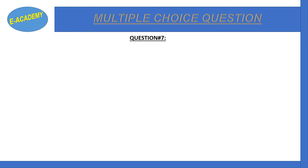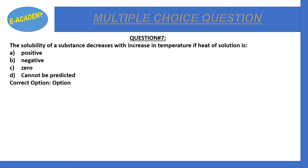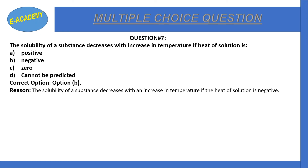Question number 7: The solubility of a substance decreases with increasing temperature if heat of solution is: a) positive, b) negative, c) zero, d) cannot be predicted. Correct option is b) negative. If the heat of solution is negative, then as temperature increases, the solubility decreases.